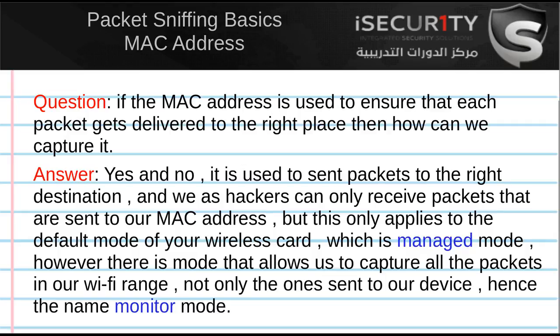From the previous video we know that MAC addresses are used to ensure each packet goes in the right direction, from the source to the destination MAC specified in the packet. So if the MAC address is used to make sure that each packet gets delivered to the right person, how can we capture it? I said in the first video we can sniff those packets, capture them, and read all the information in them — but how can we do that if each packet is actually delivered to one person?